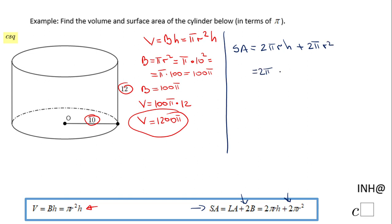In this case we have 2π, the radius is 10, and the height is 12. For the second part we have 2π and the radius again is 10². We're going to do some simplification here: we have 2 times 10 times 12.